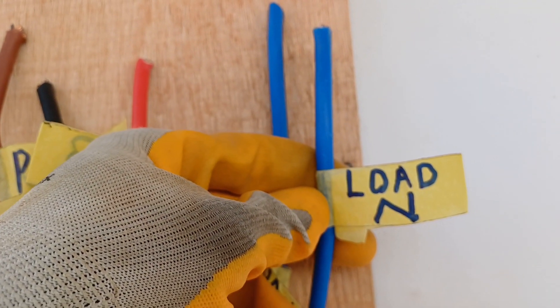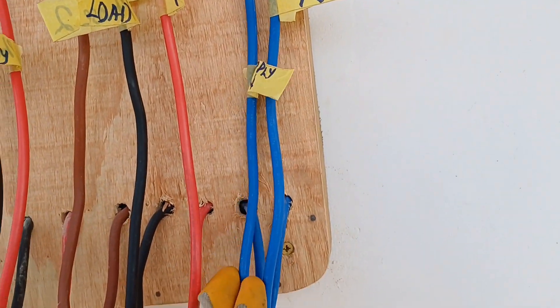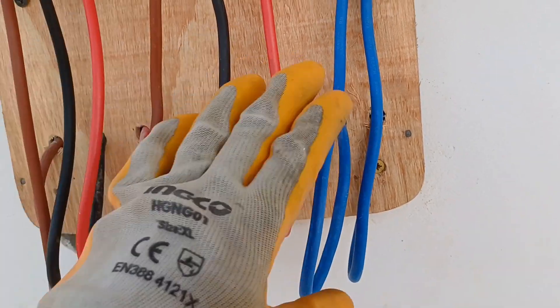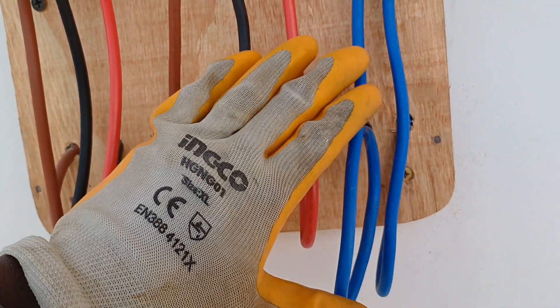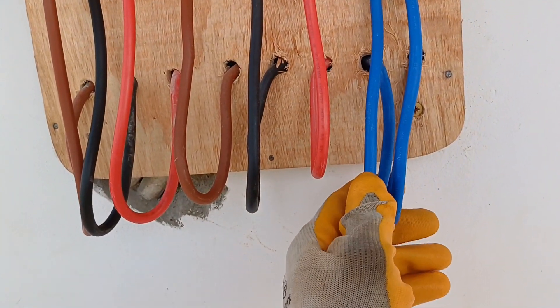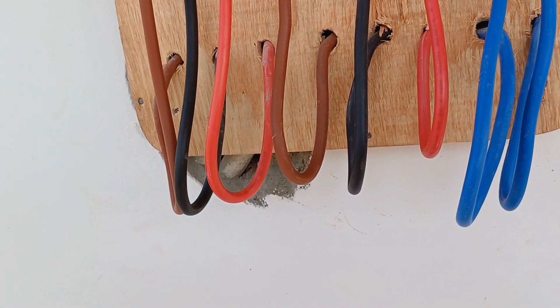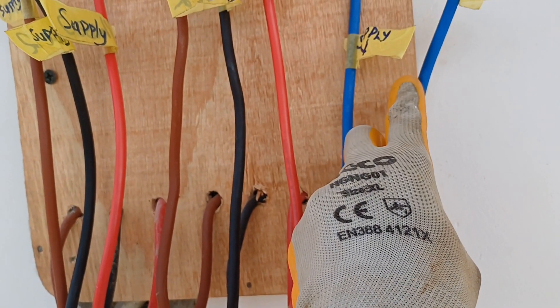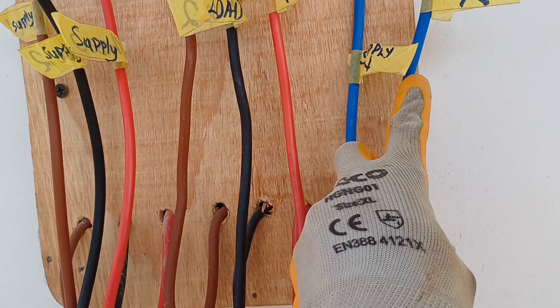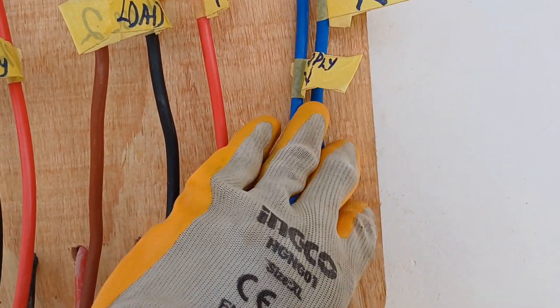There's the load here and the neutral. On this cable work here, this neutral is the one from the ECG pole, and this other neutral, the load N, is the neutral going to the distribution board.